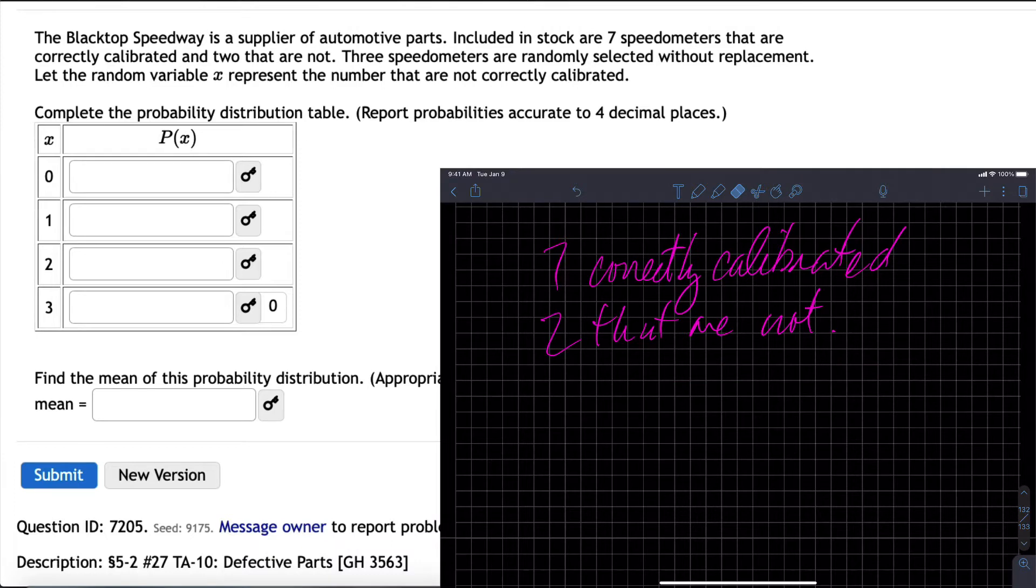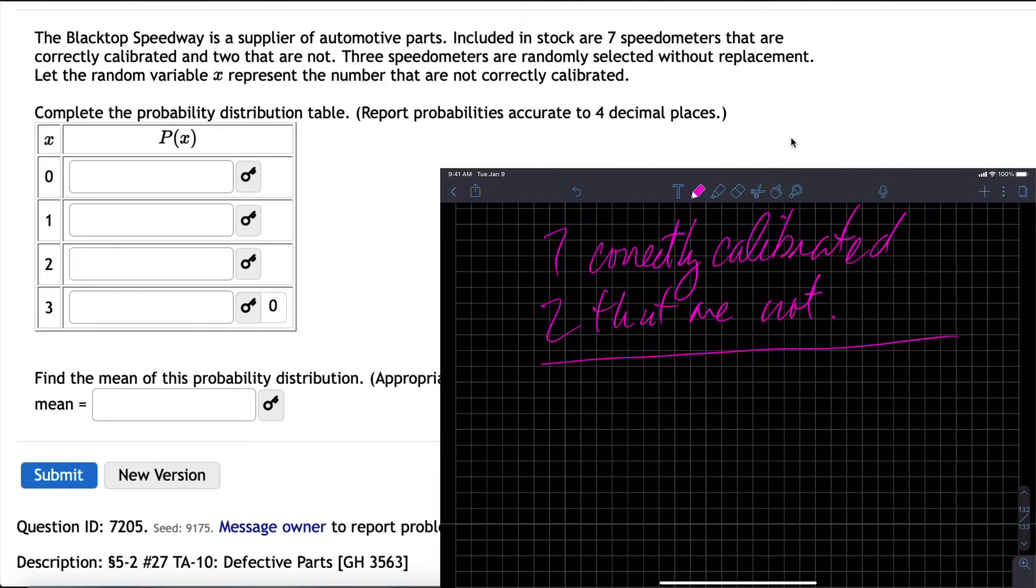The first question asks to build out this probability distribution table based on the probability of getting zero, one, two, or three non-calibrated speedometers. Three speedometers are randomly selected without replacement. You could build a tree, you could do a whole bunch of different things, but I'm going to look at it this way.